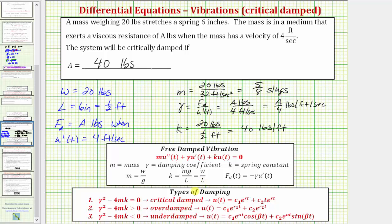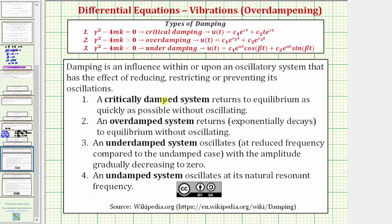So before we go, let's review each type of damping. A critically damped system, which is a system that we have when a equals 40 pounds, returns to equilibrium as quickly as possible without oscillating. An overdamped system returns to equilibrium without oscillating, but notice how here it does not stay as quickly as possible. And the third type is an underdamped system, which oscillates with an amplitude gradually decreasing to zero. And if the system is not damped, we can say it's undamped. An undamped system oscillates at its natural resonance frequency. I hope you found this helpful.